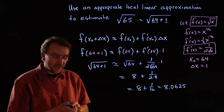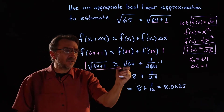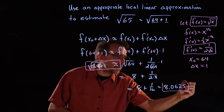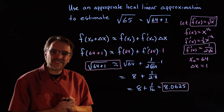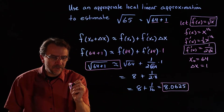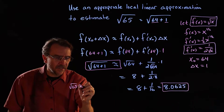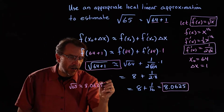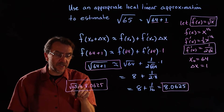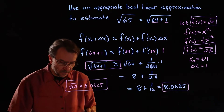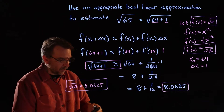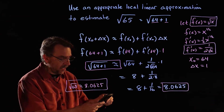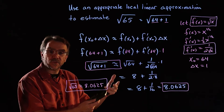So we just showed that the square root of 65 is approximately equal to 8.0625. Get your calculator and try it — remember, this is an approximation. The calculator gives square root of 65 as 8.0623, so we got pretty close.